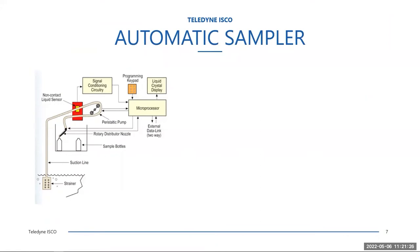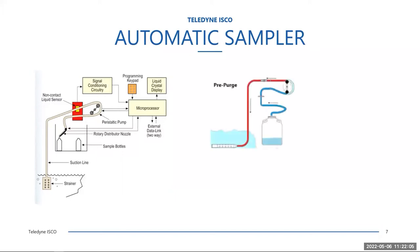An automated sampler consists of several components. You'll have a controller unit with a microprocessor, program memory, and operational software that the user defines to control how the sampler operates. Most samplers will have a display so you can evaluate the current status of the sampler. There will be a pump that, based upon how the user has programmed the unit, will operate and collect the sample. Initially, the pump will run in reverse to purge the line and remove any residual fluid that may have migrated up in the line since the last sample event.